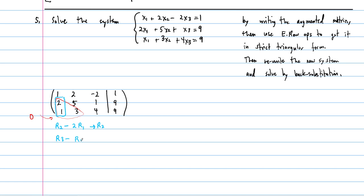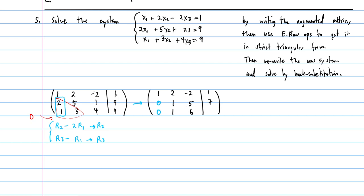The augmented matrix is: [1, 2, -2 | 1; 2, 5, 1 | 9; 1, 3, 4 | 9]. Our goal is to zero out the lower-left triangle. Take row 2 minus 2 times row 1, and row 3 minus row 1. Row 1 stays the same. Row 2 becomes [0, 1, 5 | 7]. Row 3 becomes [0, 1, 6 | 8]. Next, take row 3 minus row 2 to get [0, 0, 1 | 1], giving strict triangular form.